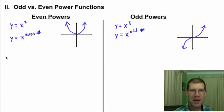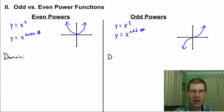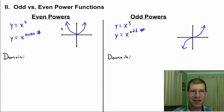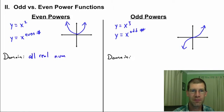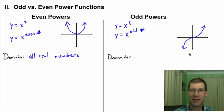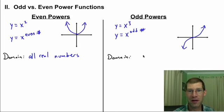Next, what's the domain for each? Domain is the set of all possible values for the independent variable x. Looking at the even power graph, what numbers could you take to an even power? For both even and odd power functions, the domain is all real numbers. You could take a positive, negative, or zero to the third power, and the graph extends way to the right and way to the left.